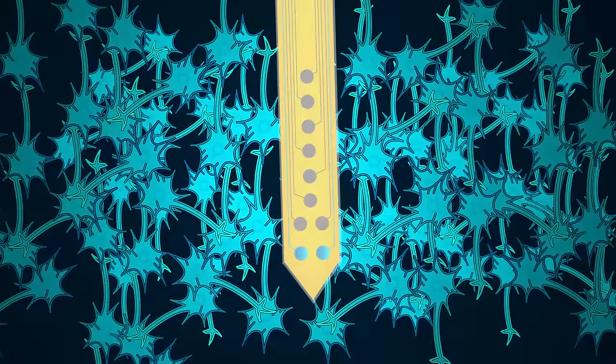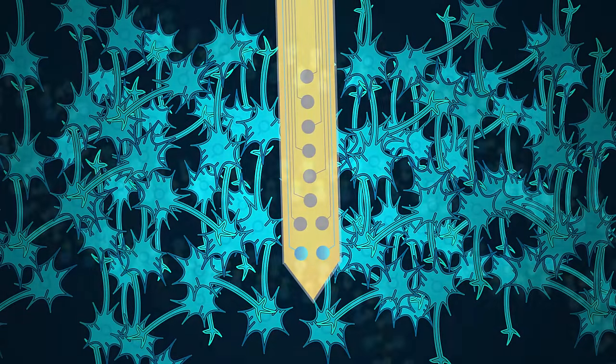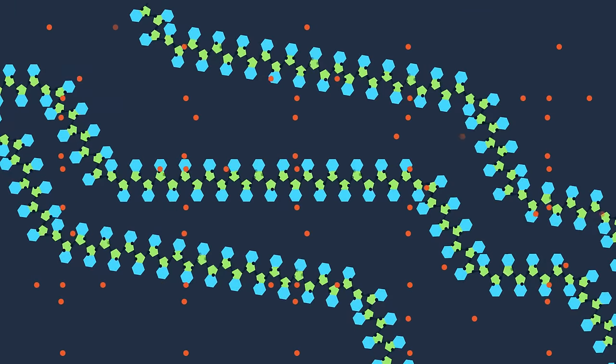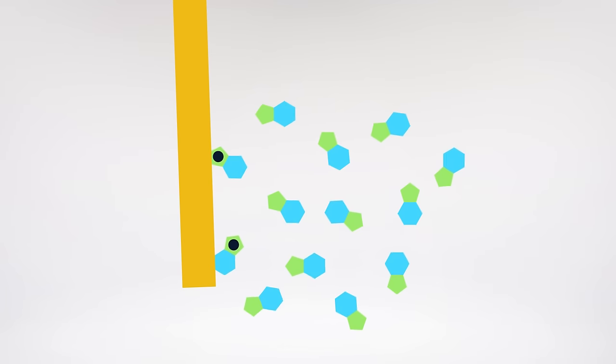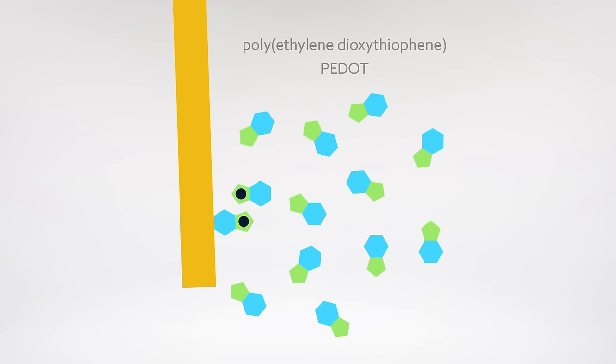This unique combination of properties is derived directly from the molecular level design of conjugated polymers. For example, the monomeric units that are electrochemically chained together to form polyethylene dioxythiophene, or PDOT...